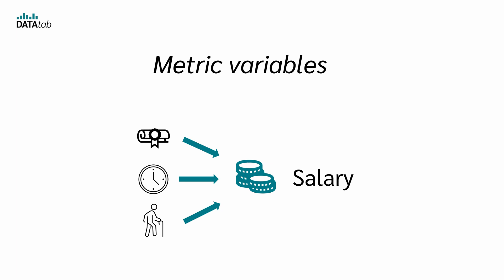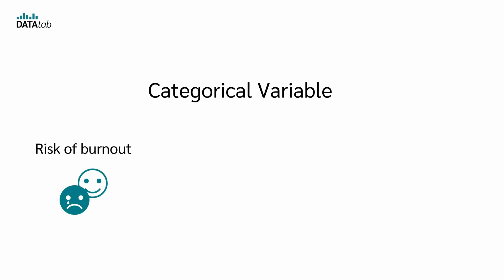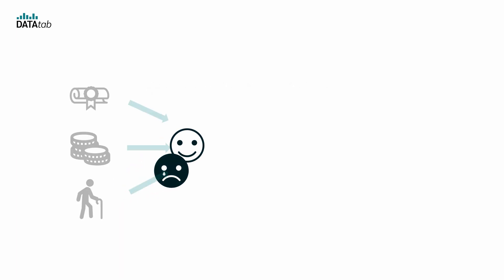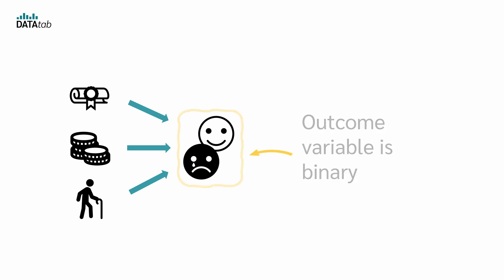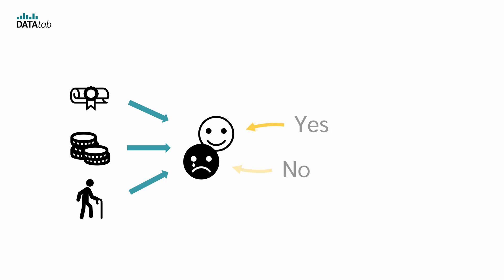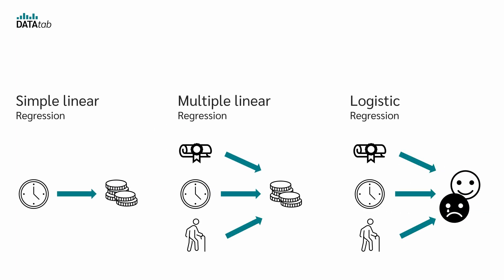Metric variables are, for example, the salary of a person, body size, or electricity consumption. In contrast, logistic regression is used when you have a categorical dependent variable. Categorical variables are, for example, whether a person is at risk of burnout or not, whether a person is diseased or not, or the type of animal. The most common form of logistic regression is the so-called binary logistic regression, where the outcome variable is binary — meaning it has two possible values, like yes or no, success or failure, or diseased and not diseased. Therefore, in linear regression the dependent variable is a metric variable, while in logistic regression it is a categorical variable, also known as a nominal variable.